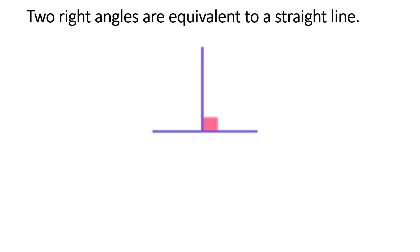Two right angles are equivalent to a straight line. This is a straight angle.